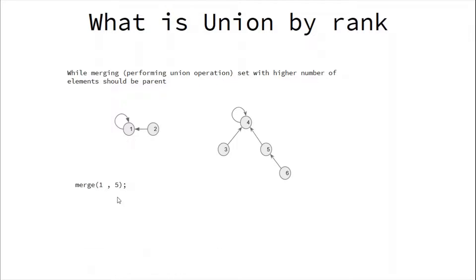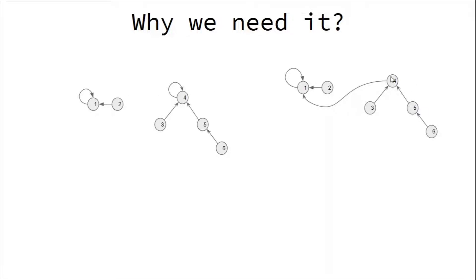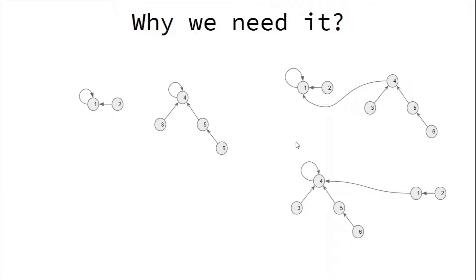Suppose these were initially two sets and we were asked to perform the merge operation between node 1 and node 5. Node 1 belongs to one set and node 5 belongs to another. There are two ways to merge: we can make node 1 the parent, making parent of 4 equal to 1, resulting in a tree of height 2. The other way is to make node 4 the parent — in that case, the height of the tree is still 2. When we make the set with the higher number of elements the parent, the height doesn't increase.